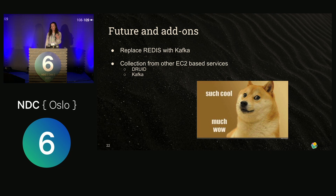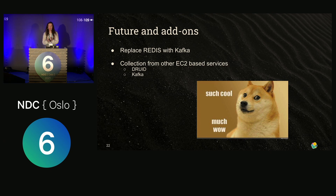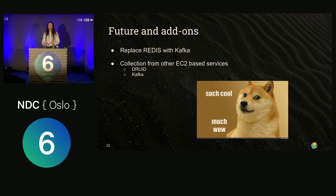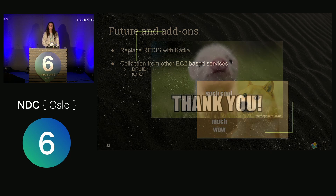Looking at the future, the first thing is replacing Redis with Kafka. As we added more applications and services to this architecture, we got more data and Redis was becoming a bottleneck. Kafka, being more robust and persistent, would prove better in this architecture. The second thing is adding more services — not just EMR-based, but EC2-based — because EMR is essentially just a bunch of EC2 servers running together. At Nielsen Israel, we were running Druid, Kafka, and schema registry on EC2, and you can connect all of these with the same ease. Thank you.